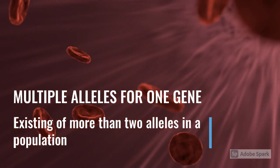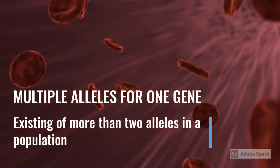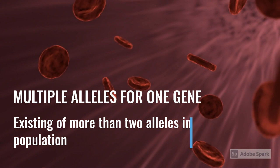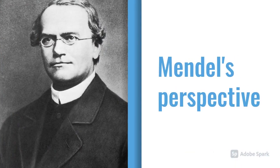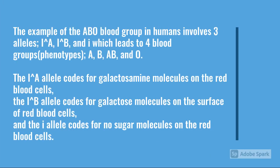Multiple alleles refers to the existence of more than two alleles for one gene in a population. Gregor Mendel only studied traits in his pea plants that showed simple or complete dominance and had only two alleles that could contribute to any one trait. But most genes exist in more than two allelic forms in the population. As an example, the ABO blood group in humans involves three alleles — I^A, I^B, and I — which leads to four blood groups: A, B, AB, and O.